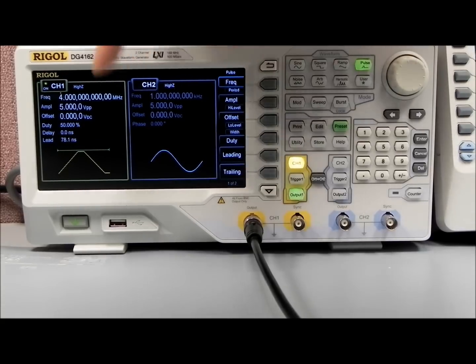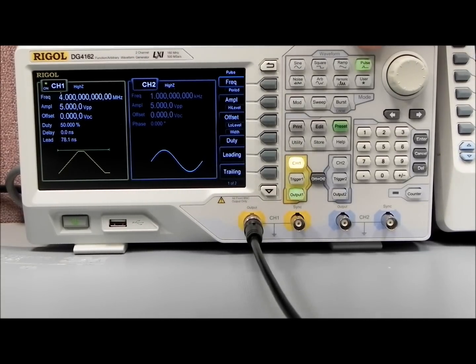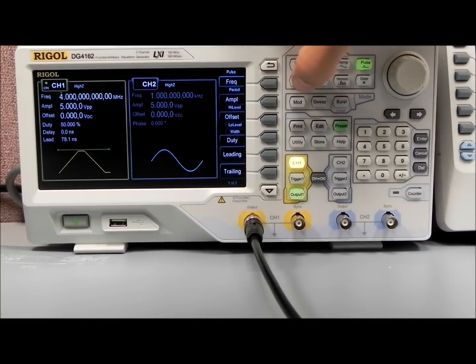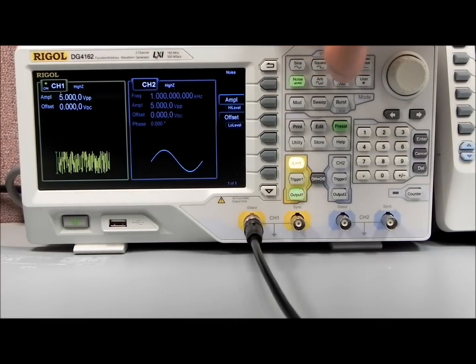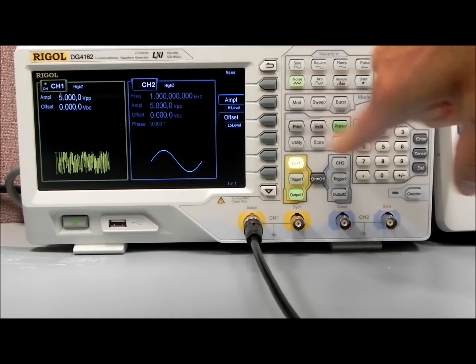This is just giving us a warning that we're at the limit of that particular function's output specifications as far as frequency. You can also select noise.